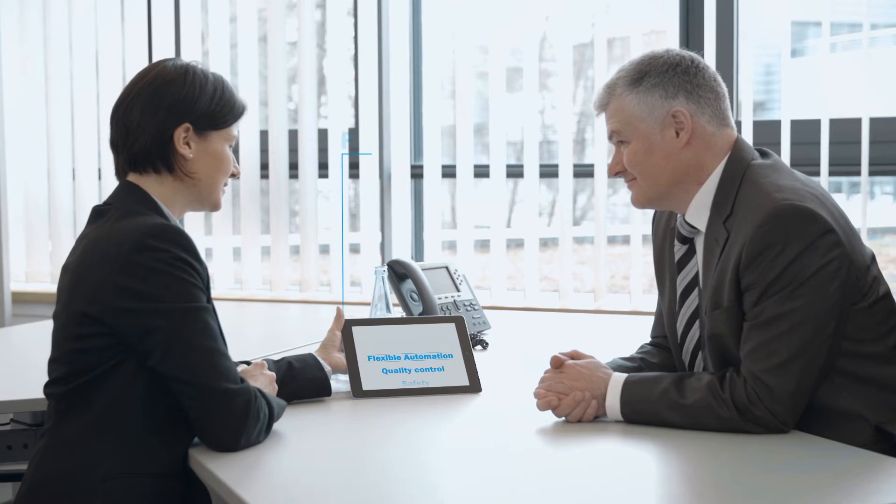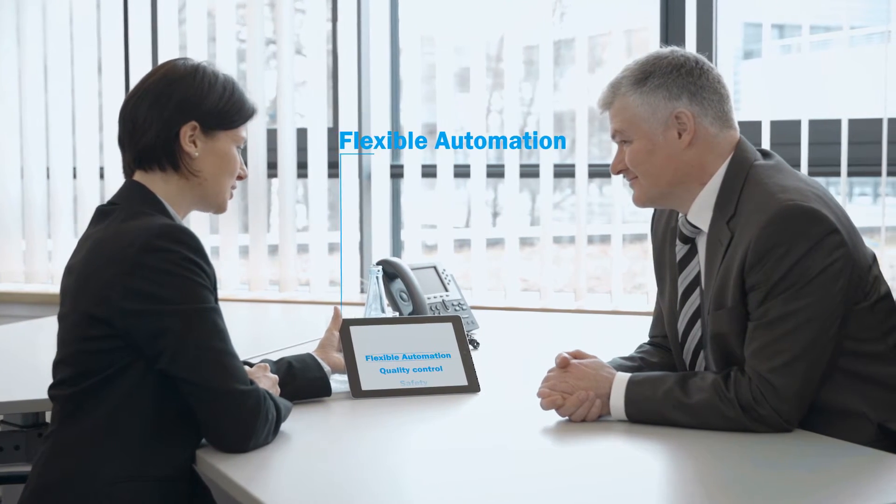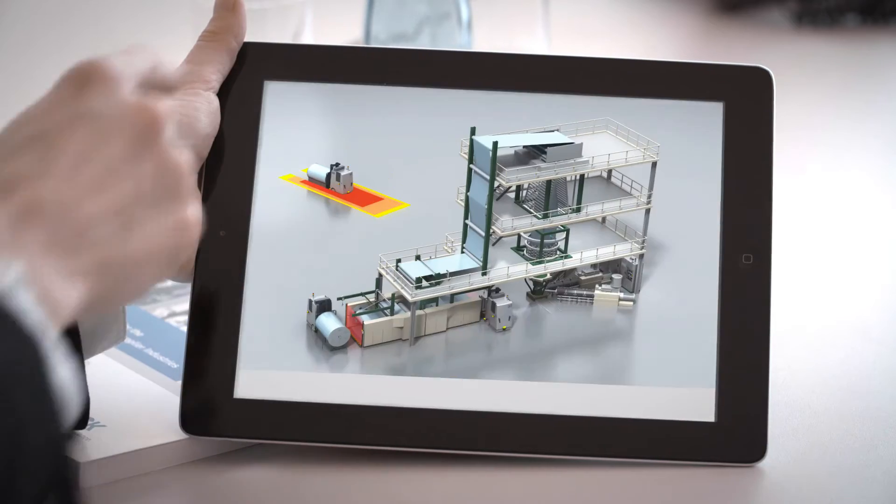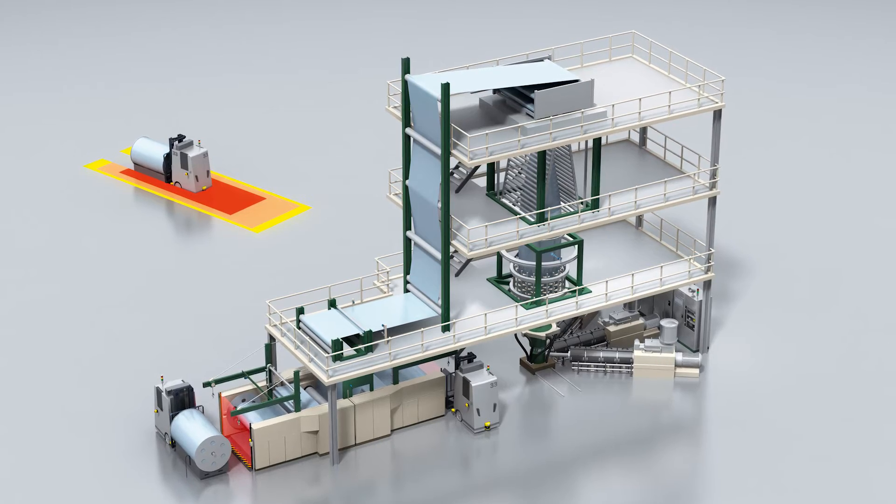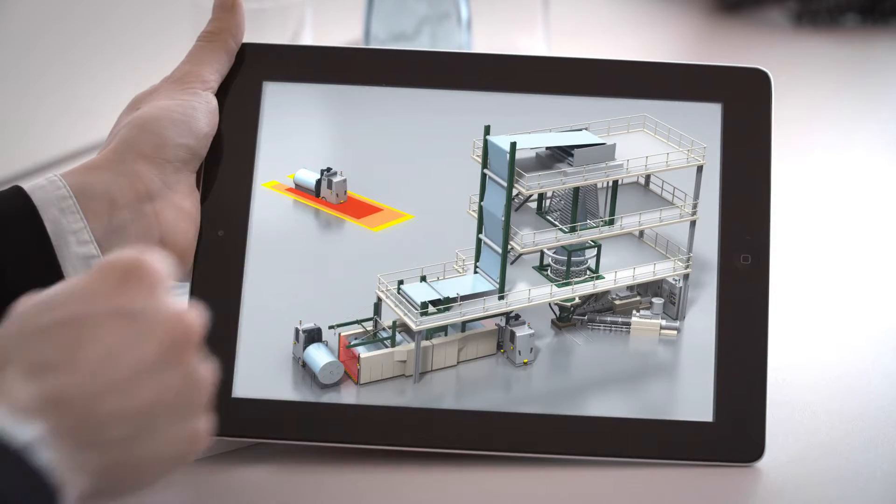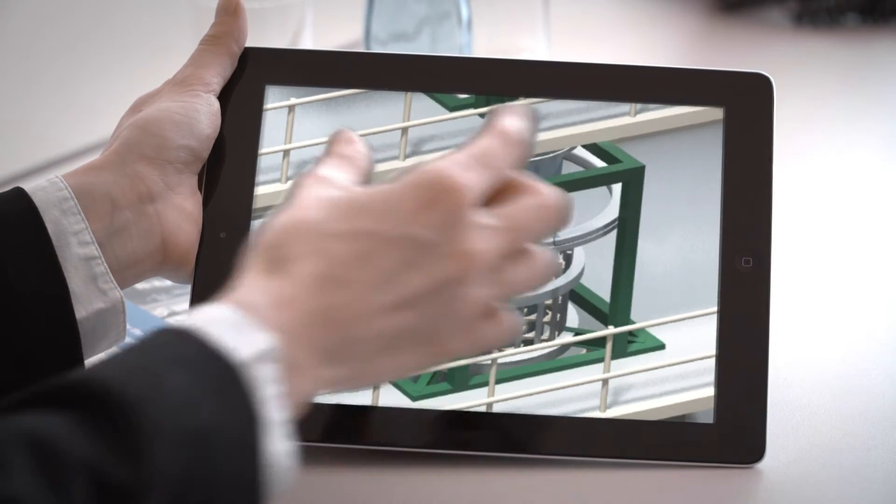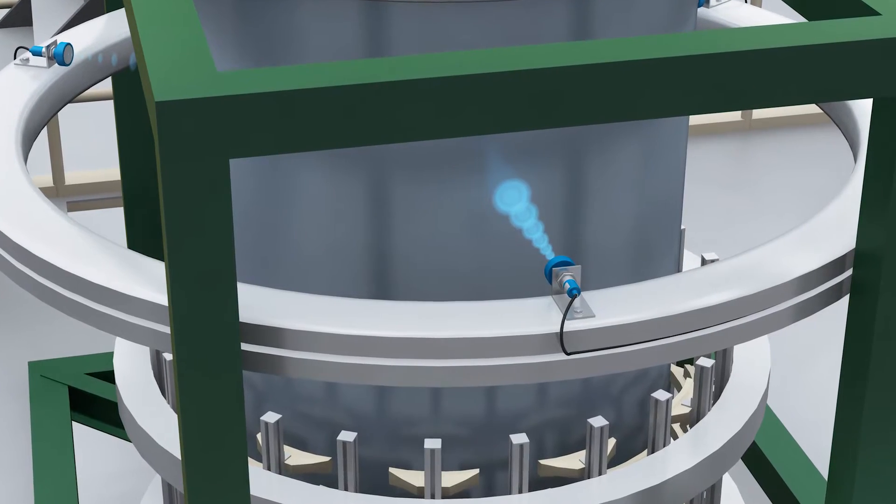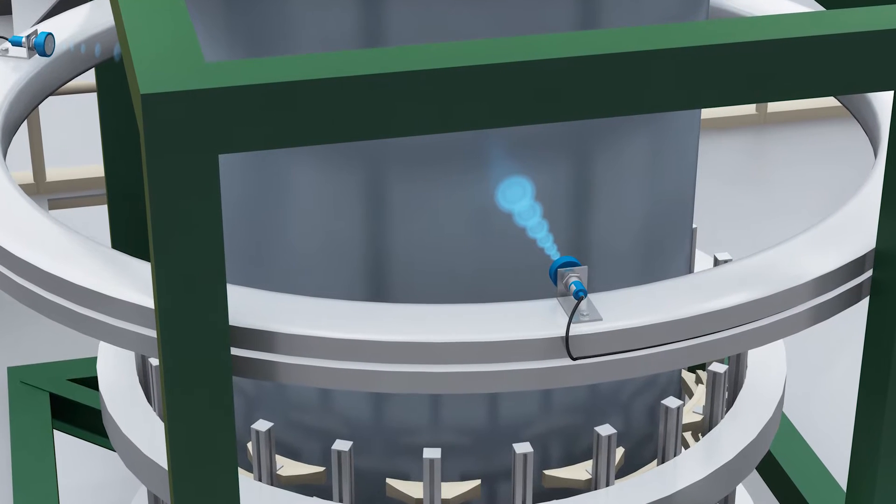For example, the film diameter on a blow film extrusion line is determined using the signal evaluation of three UM 30 ultrasonic sensors. This controls the air feed, which ensures a consistent, high-quality production result.